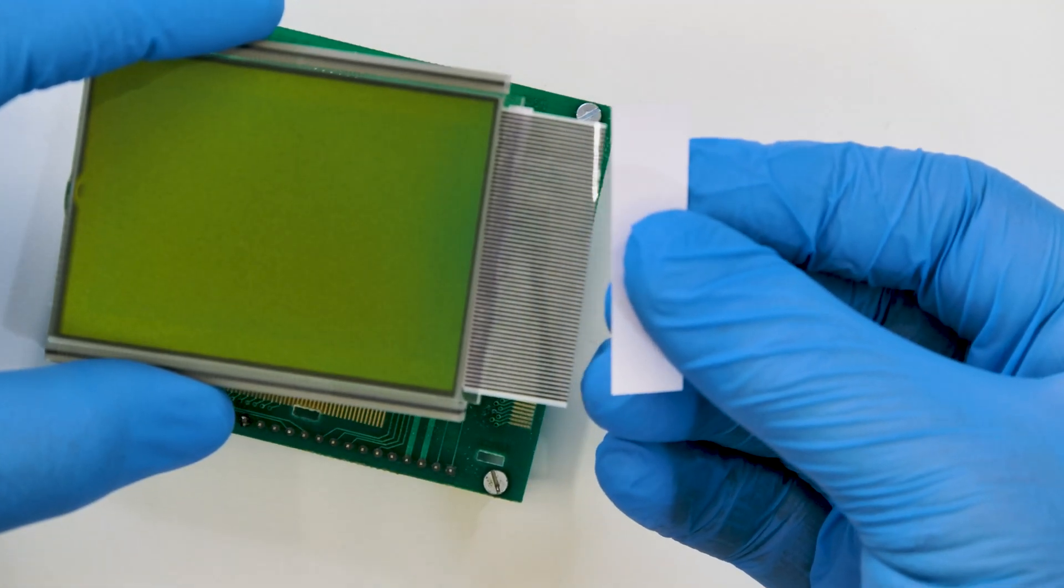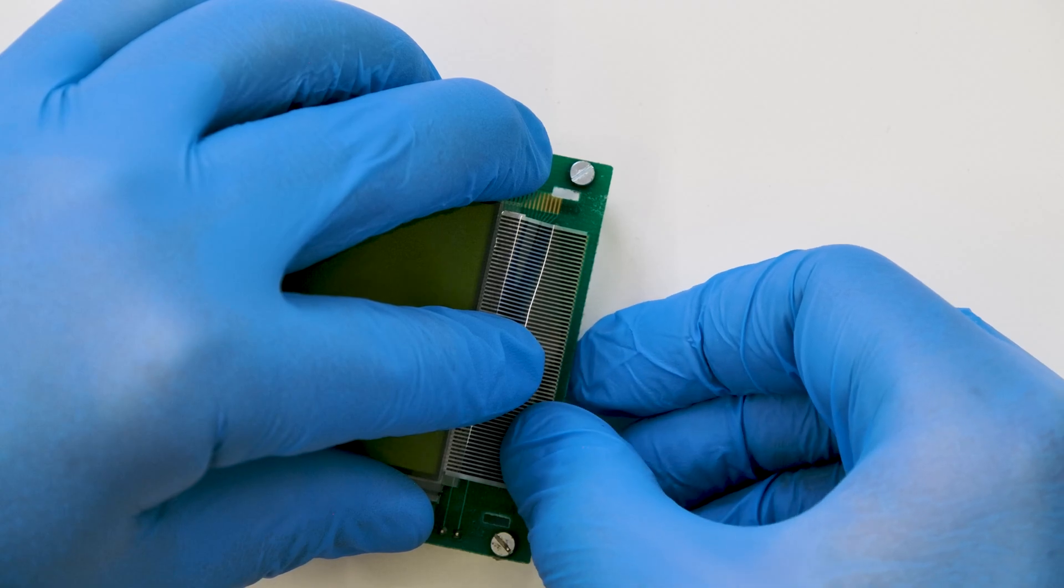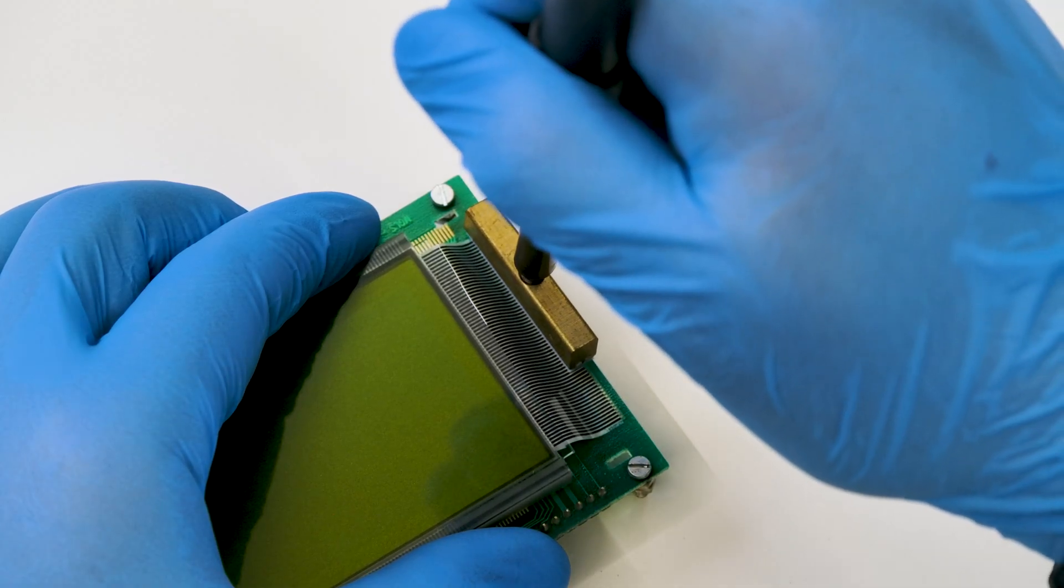Peel off the rest of the protective film from the flat cable and place it on the circuit, sealing it the same way.